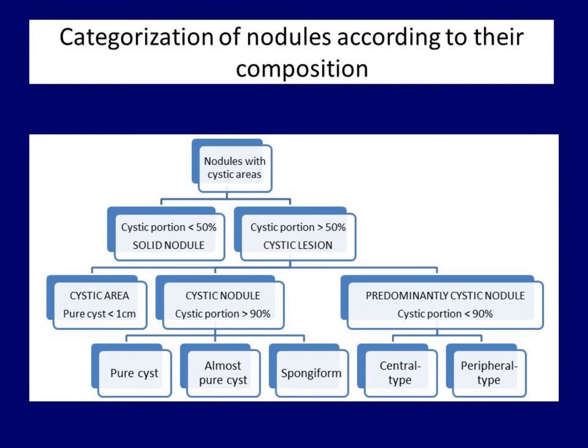The point of distinguishing between cystic and predominantly cystic nodules is that malignancy is very rare in the former. The three practically almost always benign forms are the pure cyst, the almost pure cyst, and the spongiform type. If a nodule is predominantly cystic, it is worth making a distinction whether it is peripheral or central type, as most malignant cystic nodules belong to the peripheral subtype.